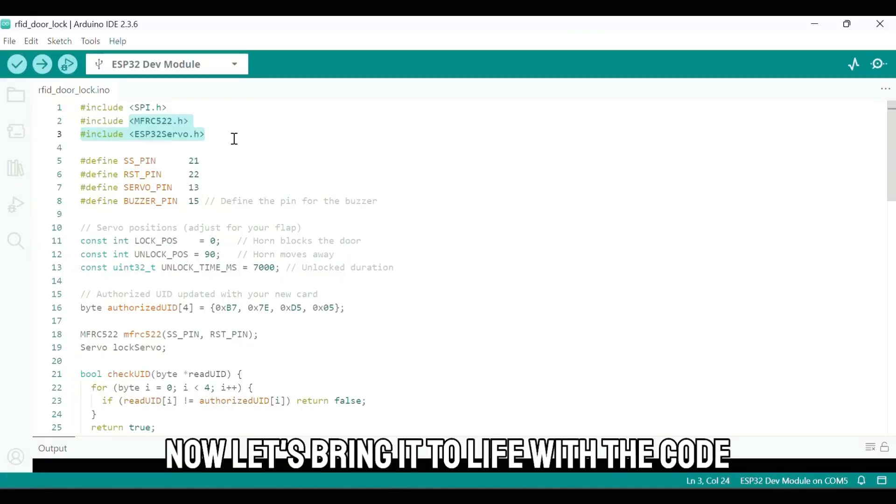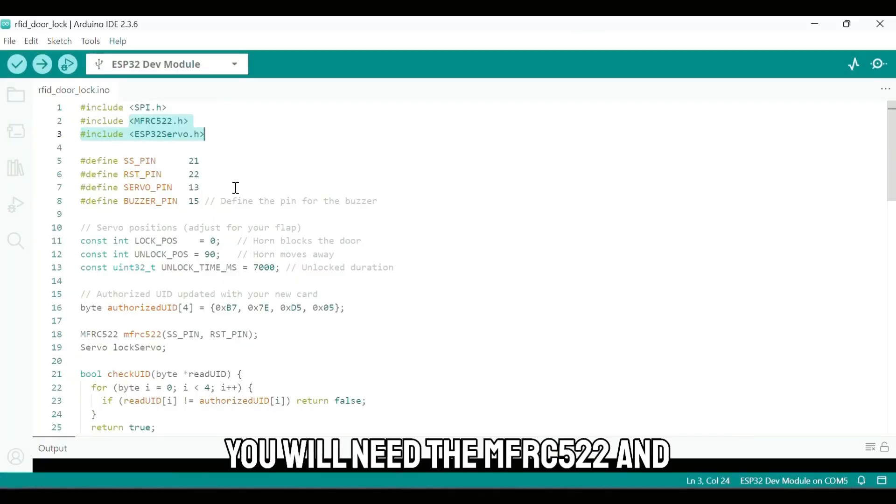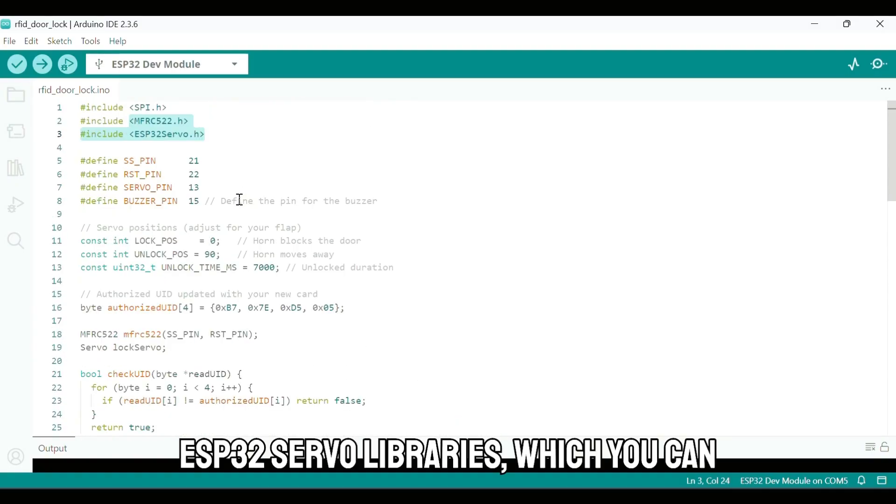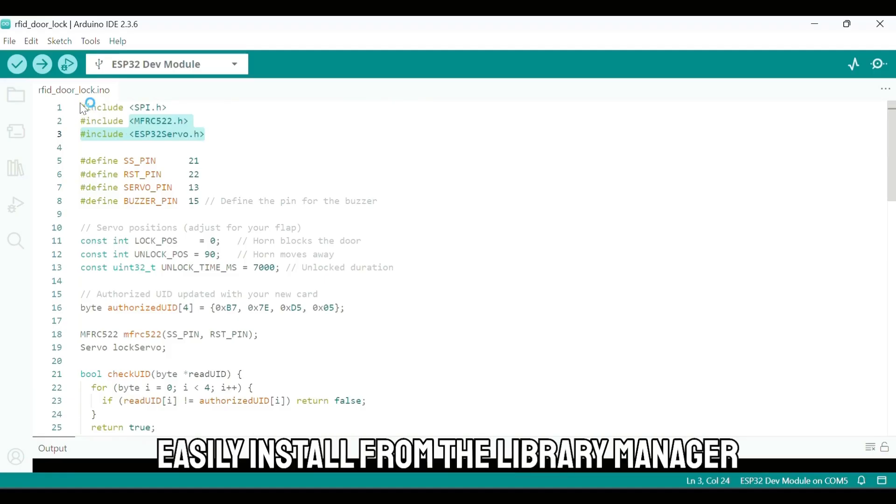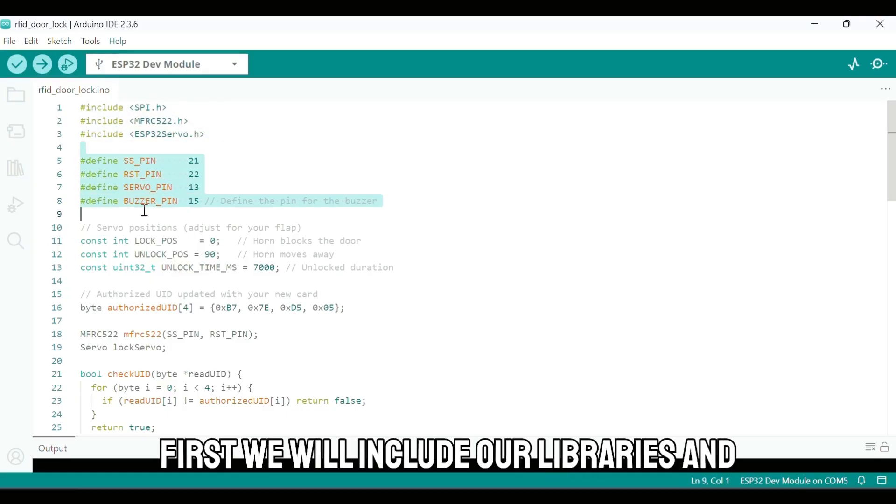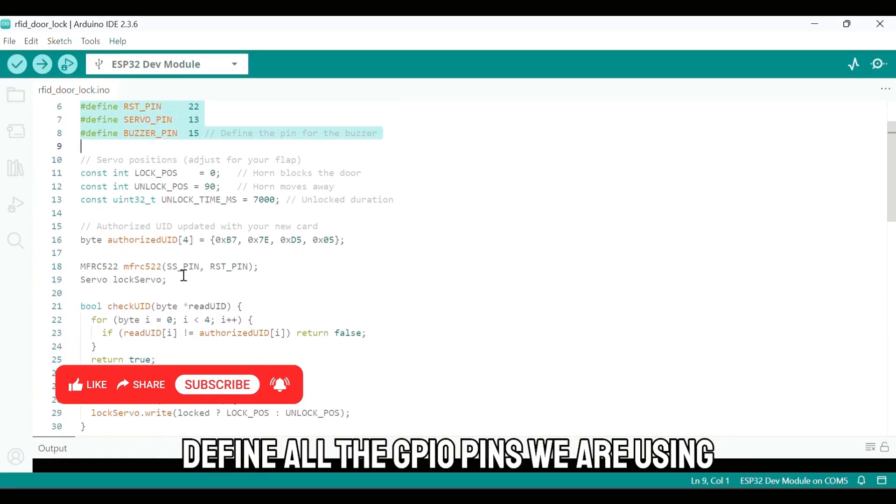Now, let's bring it to life with the code. You will need the MFR-C522 and ESP32 servo libraries, which you can easily install from the library manager. Here is the complete sketch. For the libraries and pin definitions, first we'll include our libraries and define all the GPIO pins we are using.